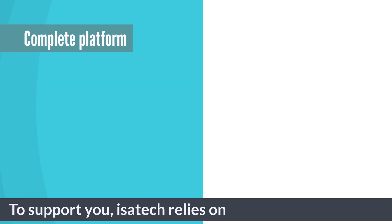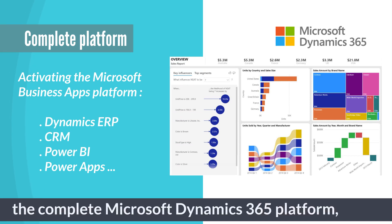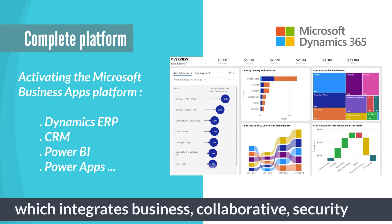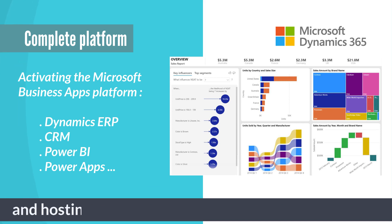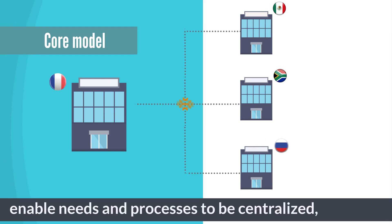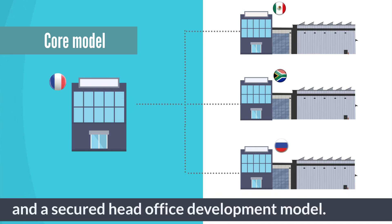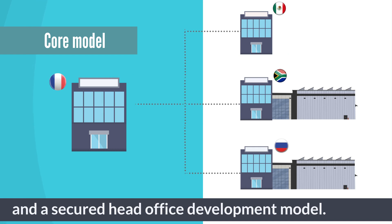To support you, Isatec relies on the complete Microsoft Dynamics 365 platform which integrates business, collaborative, security and hosting functionalities. The choice and the deployment of a core model enables needs and processes to be centralized for a guaranteed cost control and a secured head office development model.